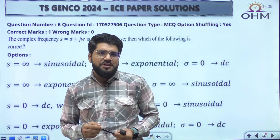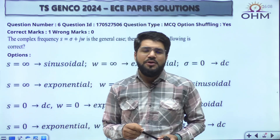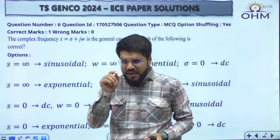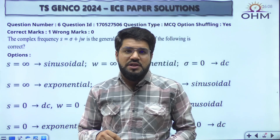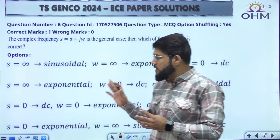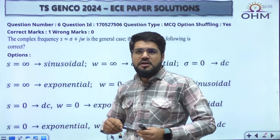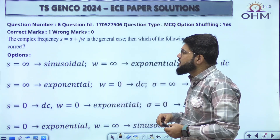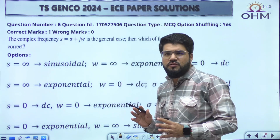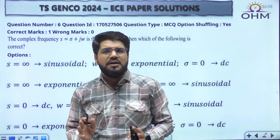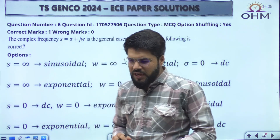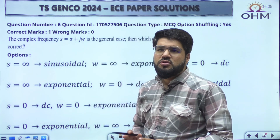Hello students, welcome to OHM Institute. In this video I am going to discuss the questions of signals and systems that were asked in the recent GENCO examination, which was conducted on Sunday the 14th of July, for the EC branch. We have already discussed the questions of the electrical branch. There are five questions of signals and systems, and all of them are simple ones.